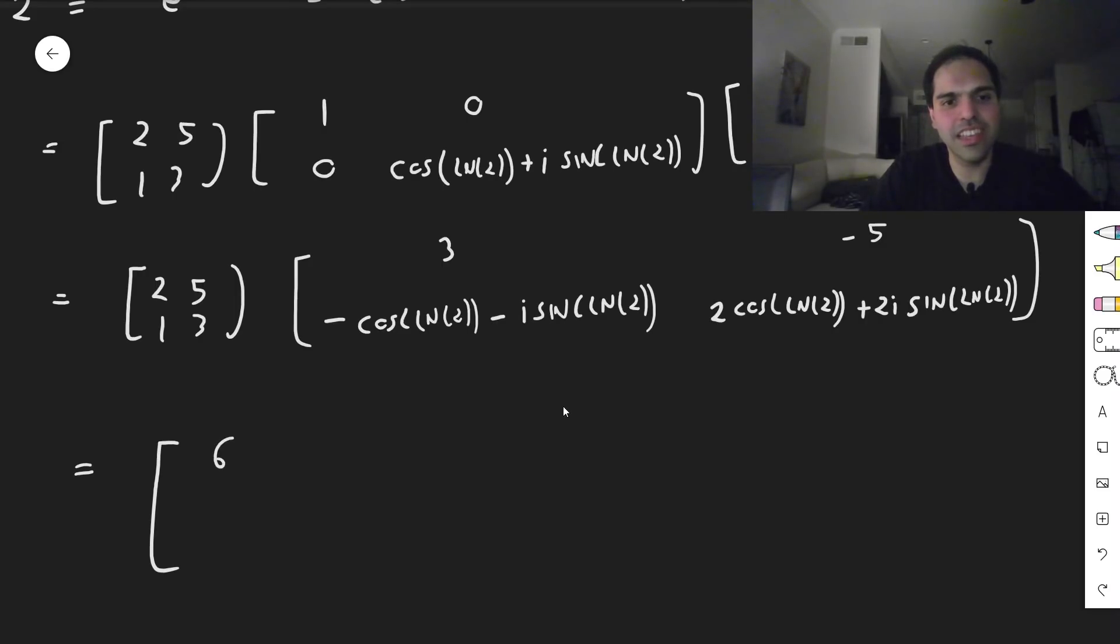We get 6, and then minus 5, cosine of ln of 2, okay, and then.